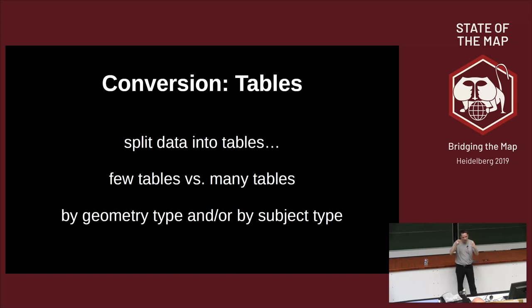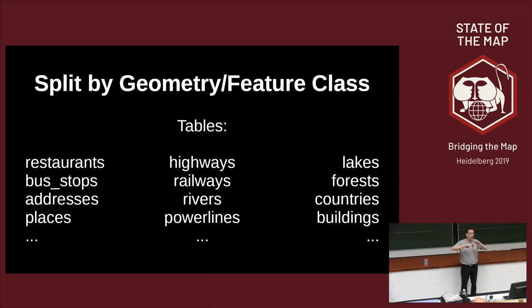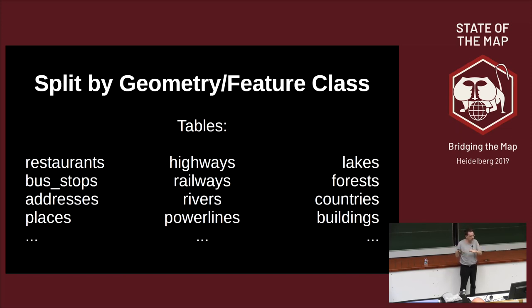You also need to think about how to organize your data across tables. One obvious approach is to have three tables: a nodes table, a ways table, and an areas table. Another approach is to have many more tables organized by feature type—one table for restaurants, one for bus stops, one for rivers, and so on. There are many different ways to do this, and which makes more sense depends on your use case.